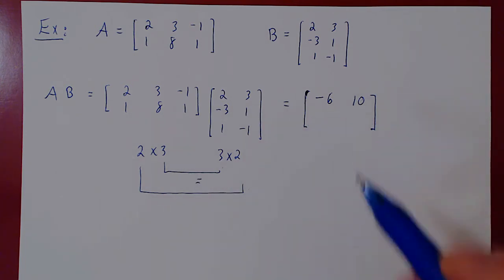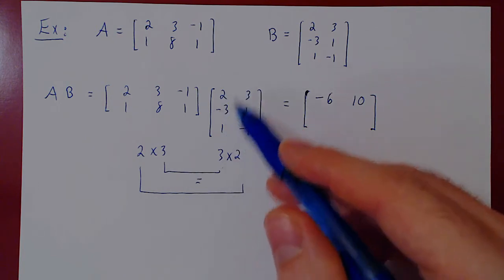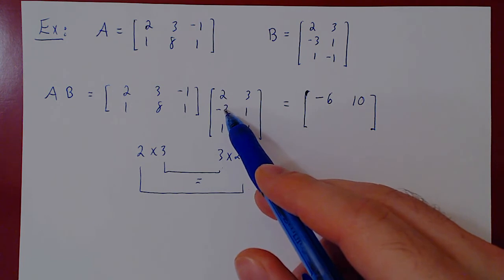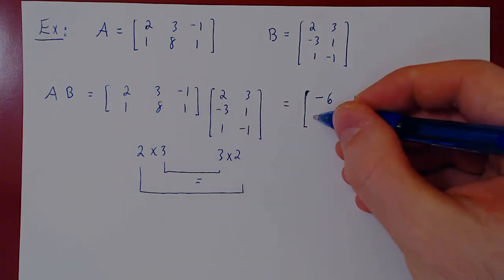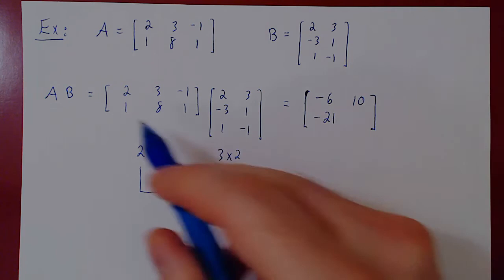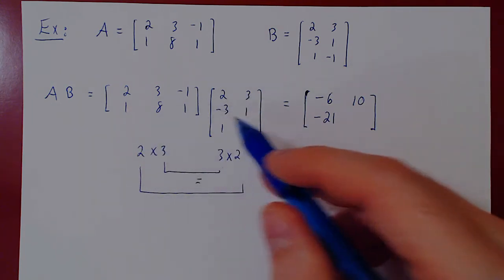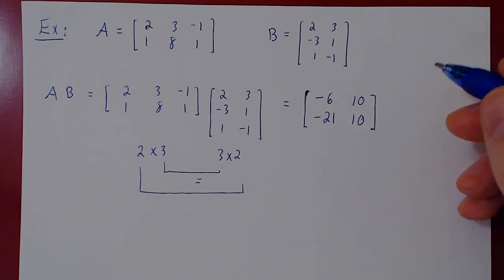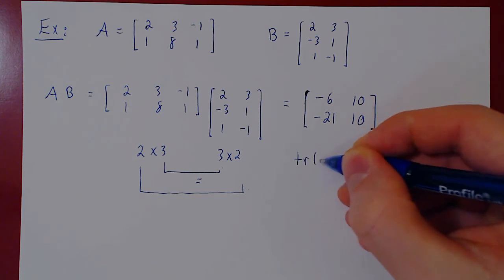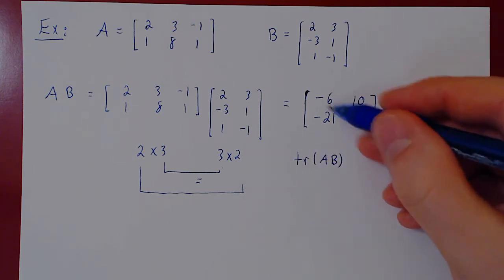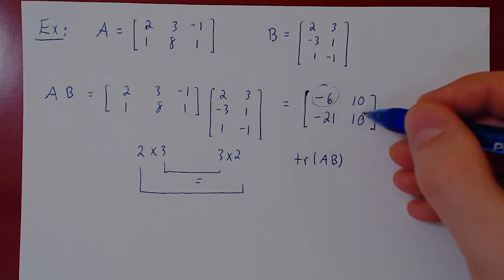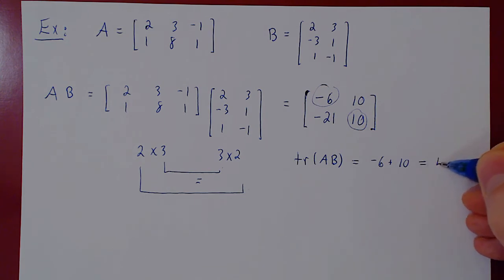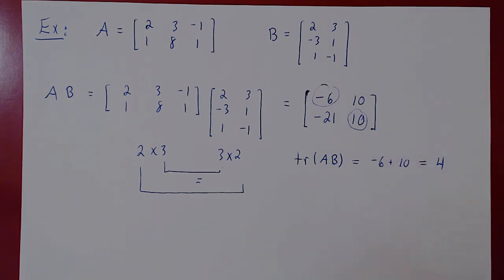To construct the second row, we fix the second row of A and go through every column of B. 2, minus 24, negative 22, plus 1, negative 21. 3, plus 8, 11, minus 1, 10. And so we can now look at the trace of AB. The trace of AB, the sum of the diagonal entries, negative 6, plus 10, is quite simply 4. So the trace of AB is 4.